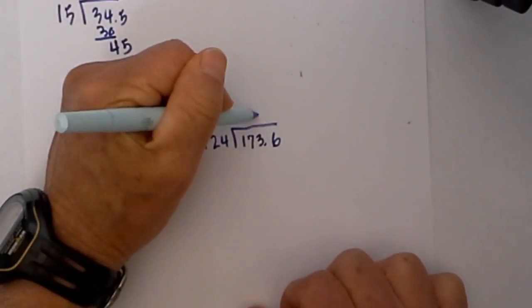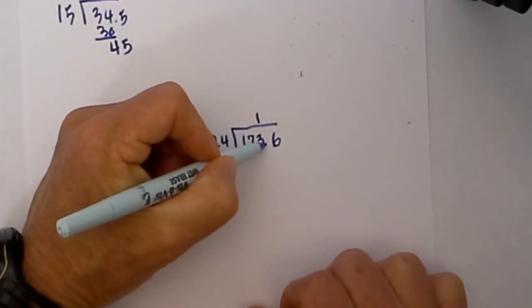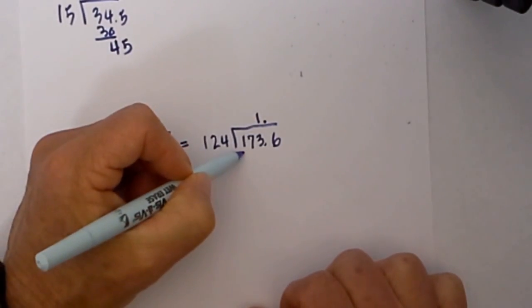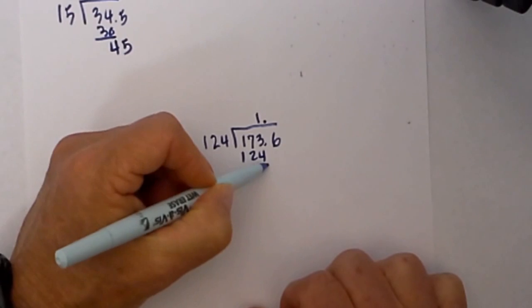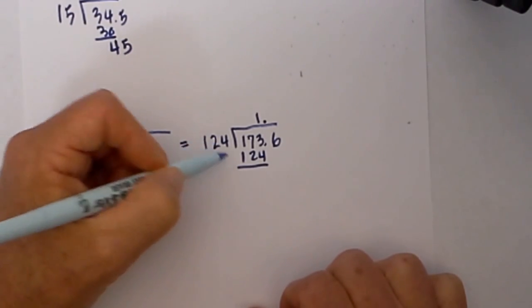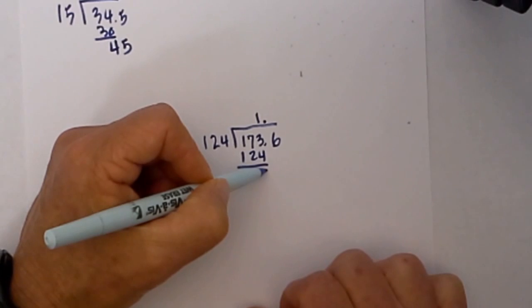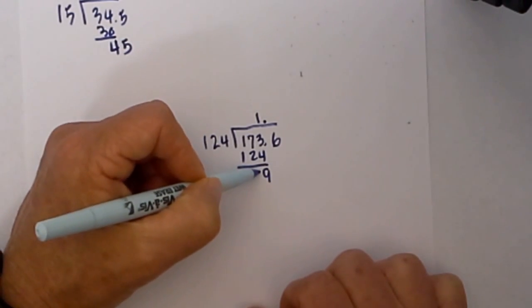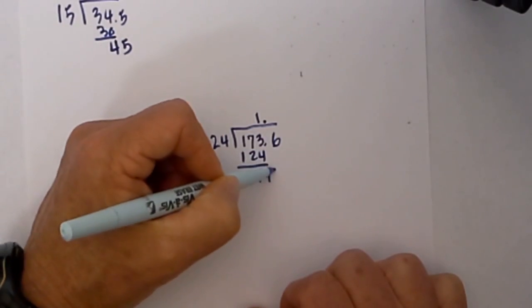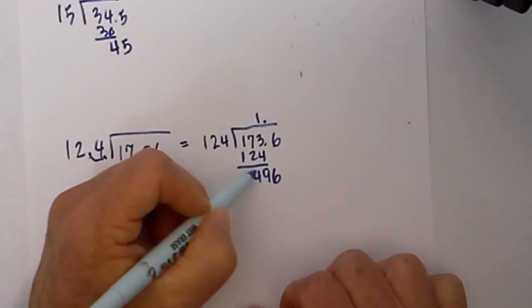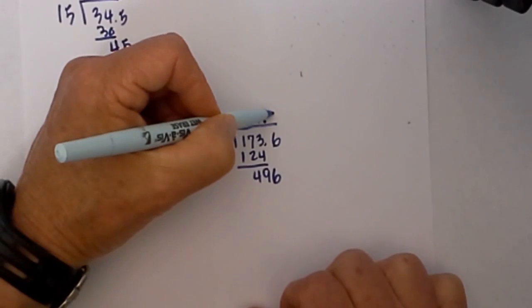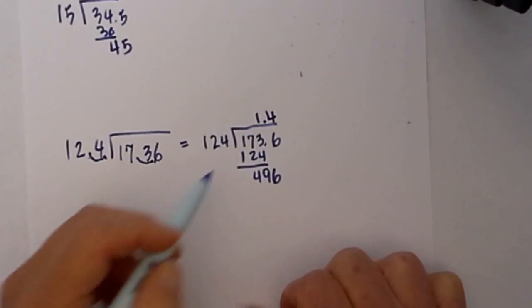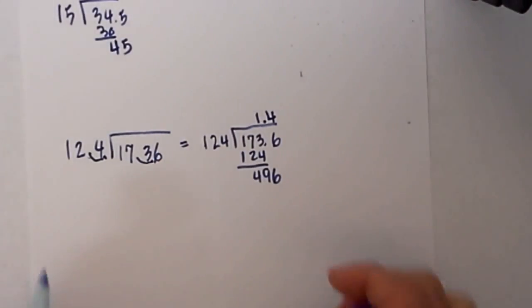124 will go into 173 one time. I'm going to move this decimal so I don't forget about it. We have 173 minus 124, and let's see what that is. We have 9 and then that becomes 49. 124 will go into 496 four times, so now it looks like we have 1.4.